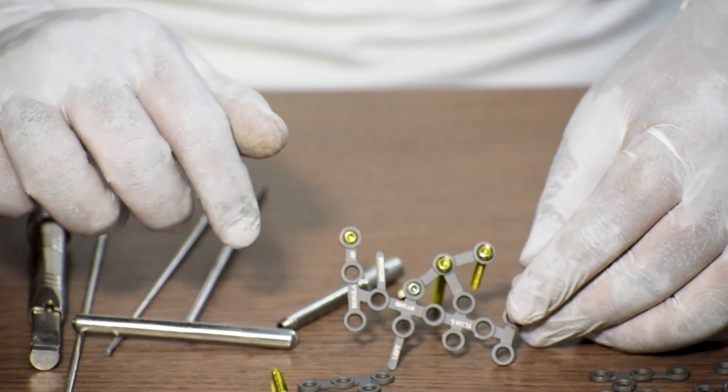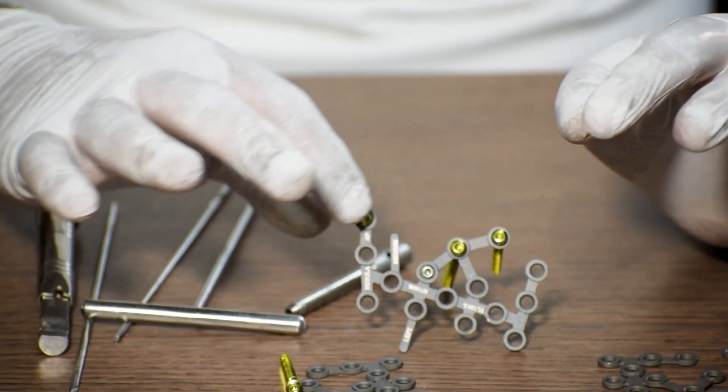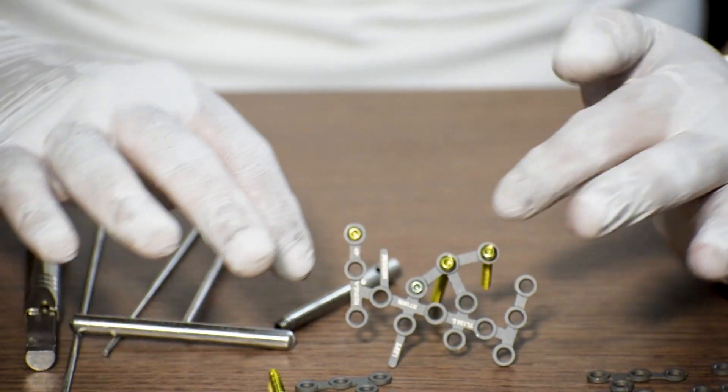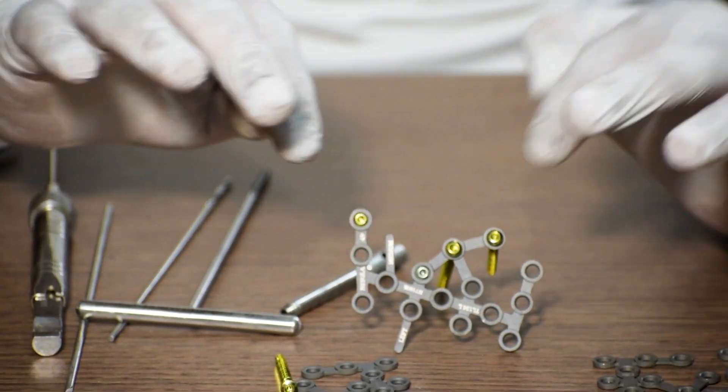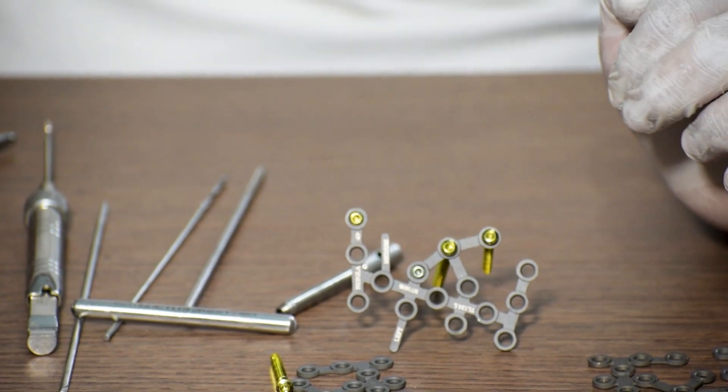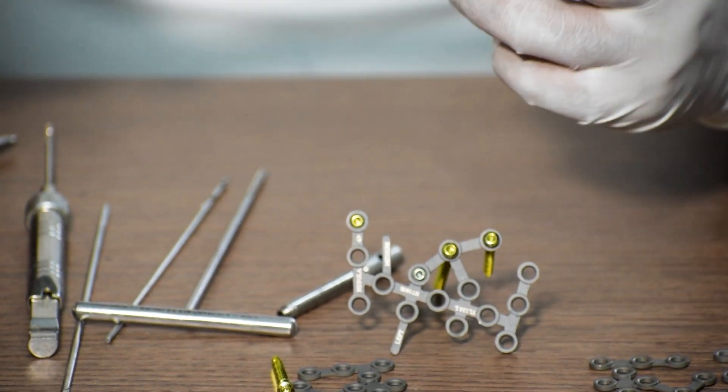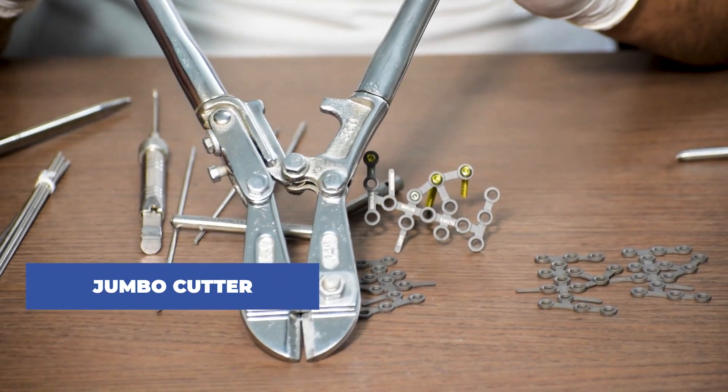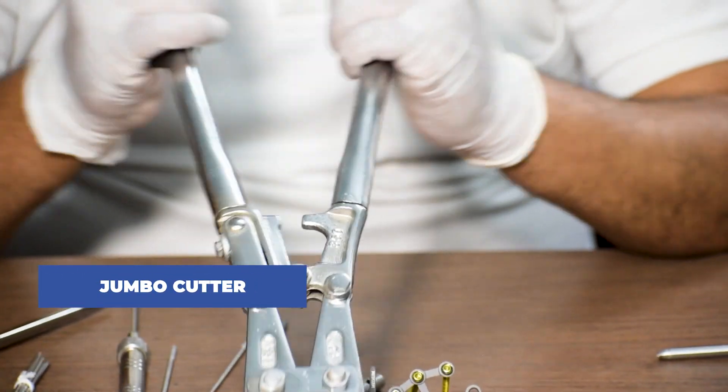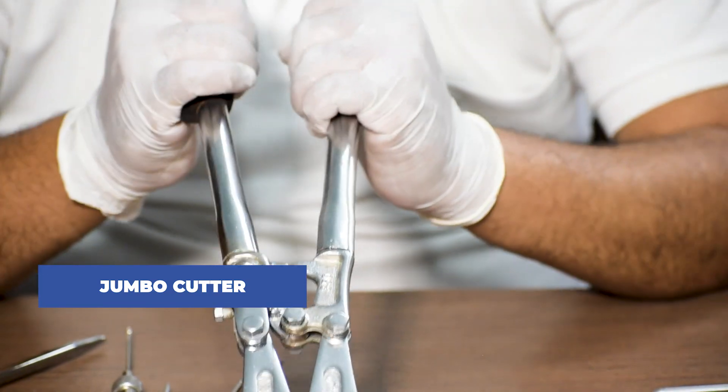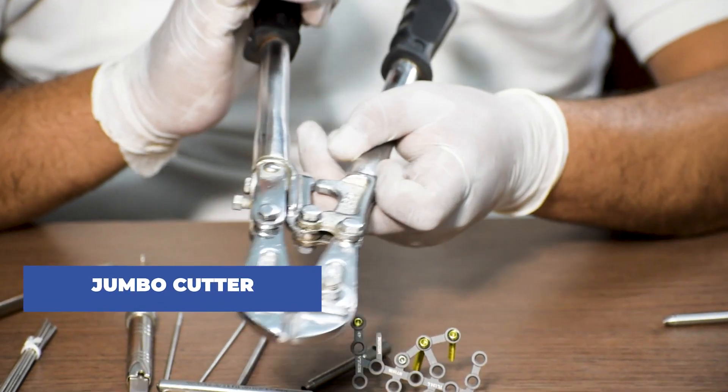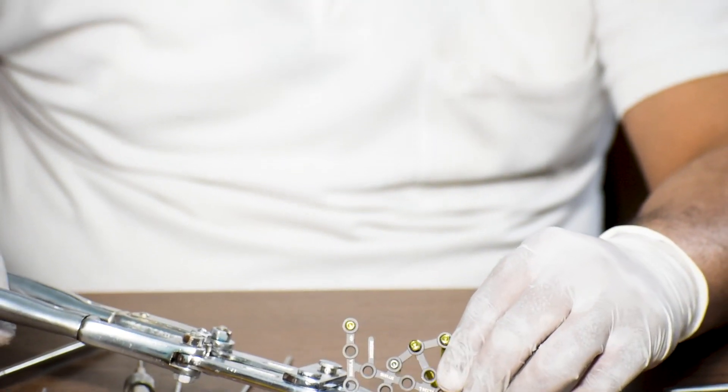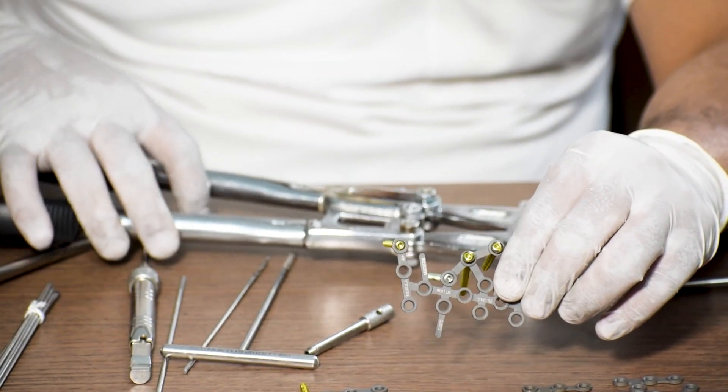Make a note here, for a calcaneal locking plate, at times it might be needed to cut the plate from places in order to get the perfect fit for the fracture site. Because at times calcaneal fracture might differ from person to person. That's when we will need a jumbo cutter. This will help us to cut the plate and it is a very important piece of equipment needed. This can help us to cut the plate from any angle.